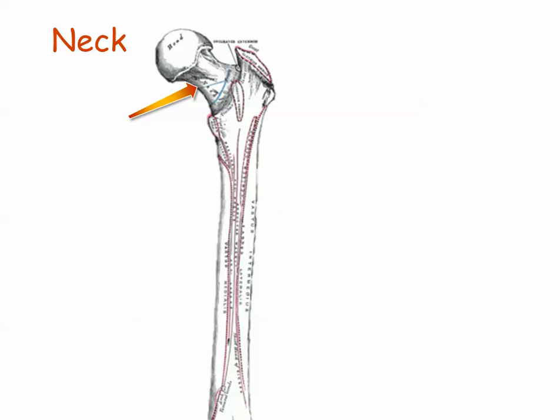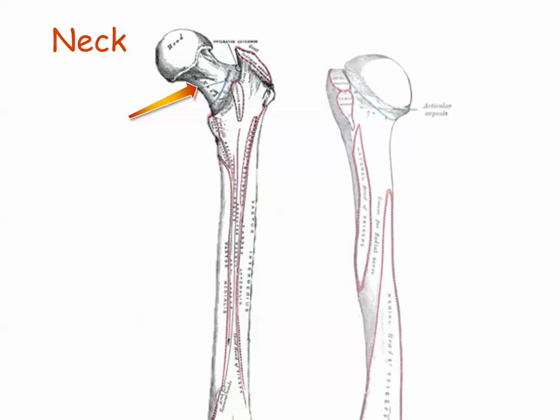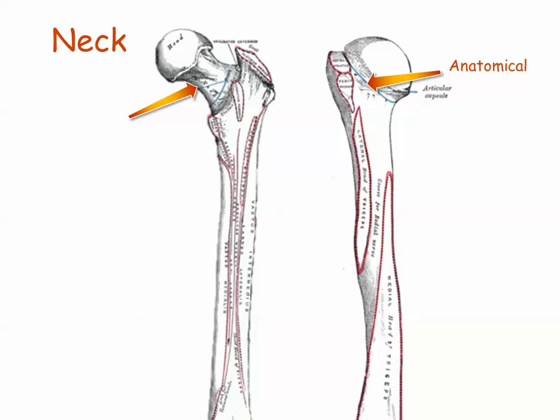The neck is a narrowed portion of a bone, usually at the base of a head. The neck of the femur, or thigh bone, can be seen here. The long bone of the arm, the humerus, has an anatomical neck where the head joins the body of the bone. But there is also a narrowing below that where fractures may occur, called the surgical neck.